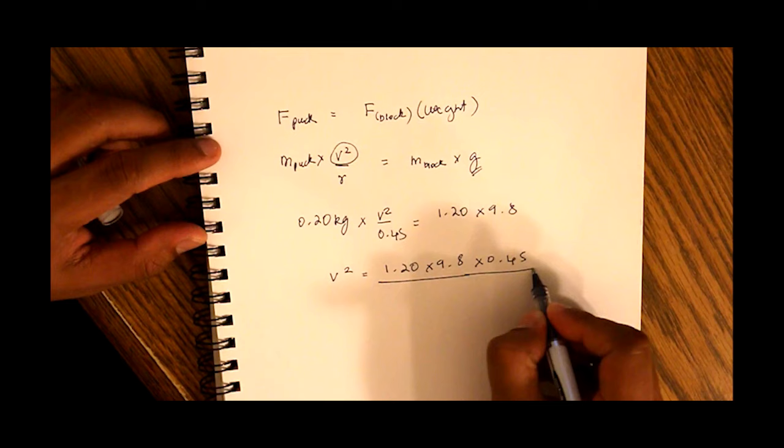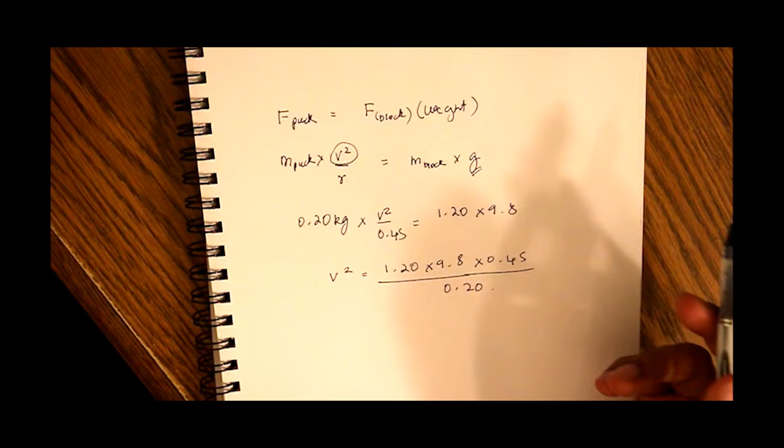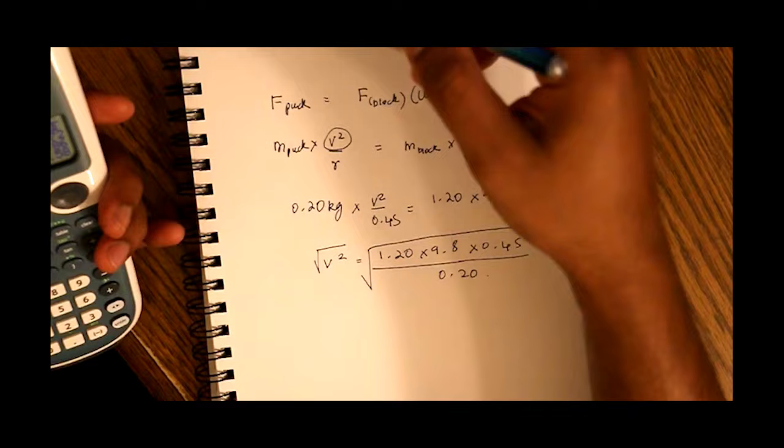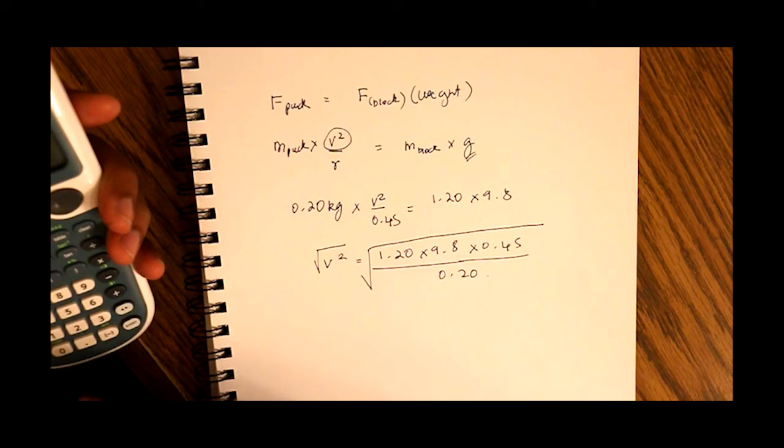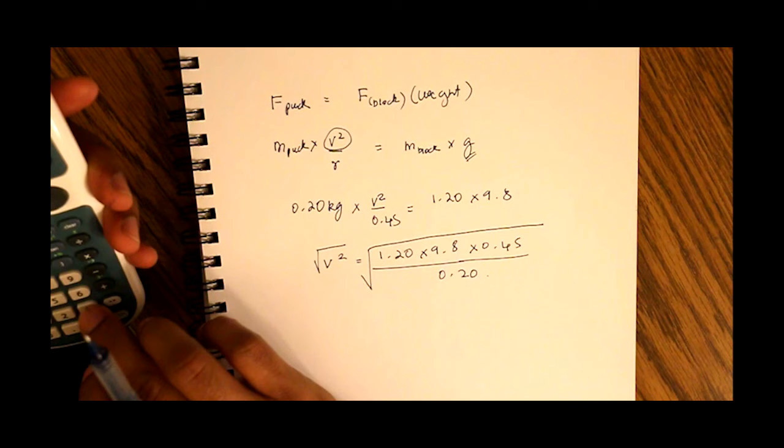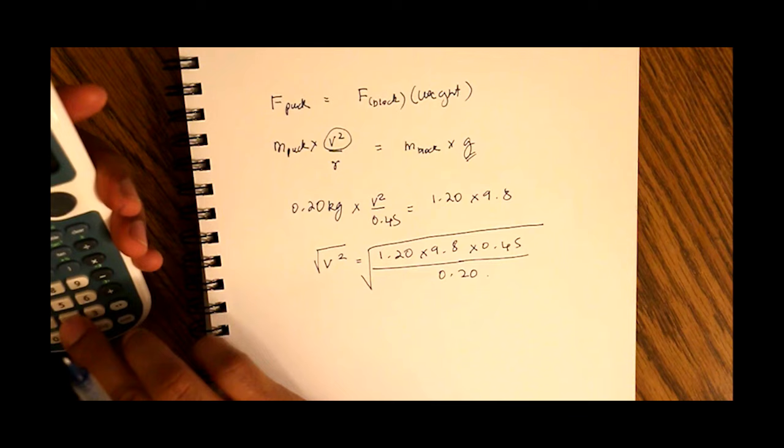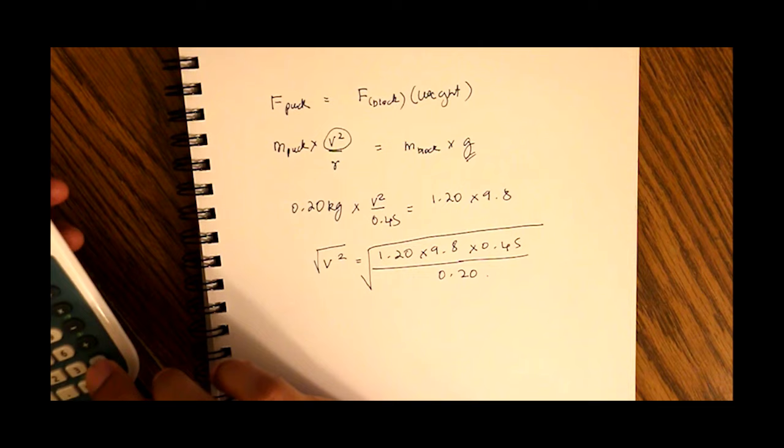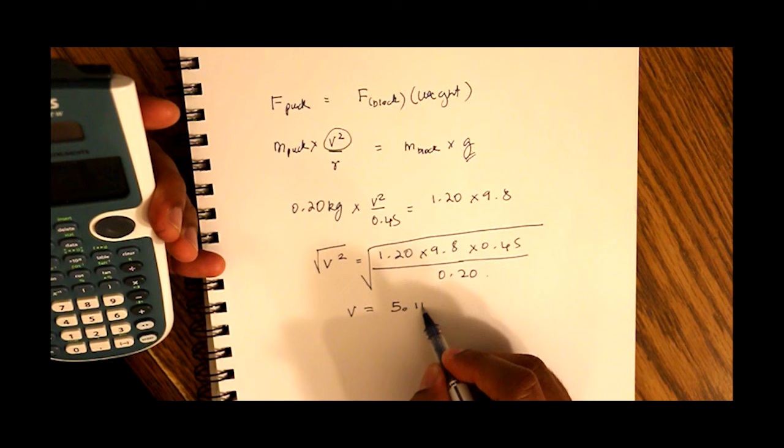And just to save my writing we'll just take the square root of both sides to get v. So it's asking you the speed, the linear speed. So speed is equal to, let's do that again, 1.2 times 9.8 times 0.45 divide by 0.2, and you take the square root of that and you end up with a v of 5.14 and that is meters per second.